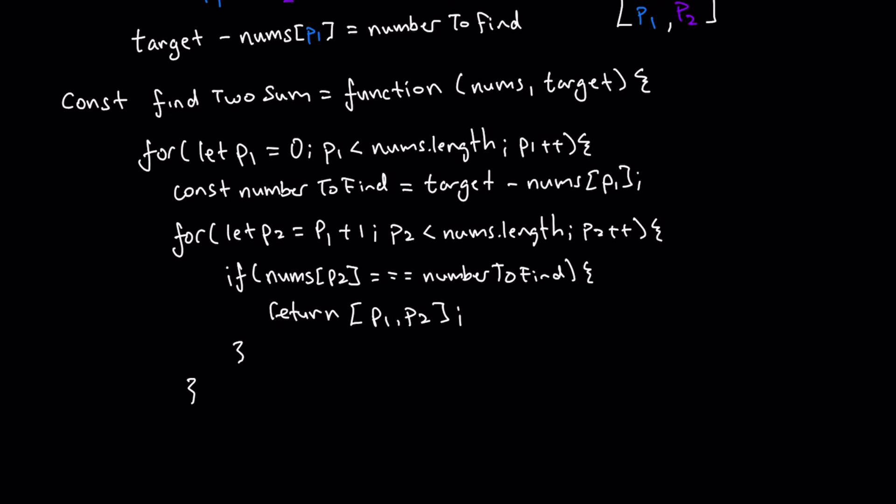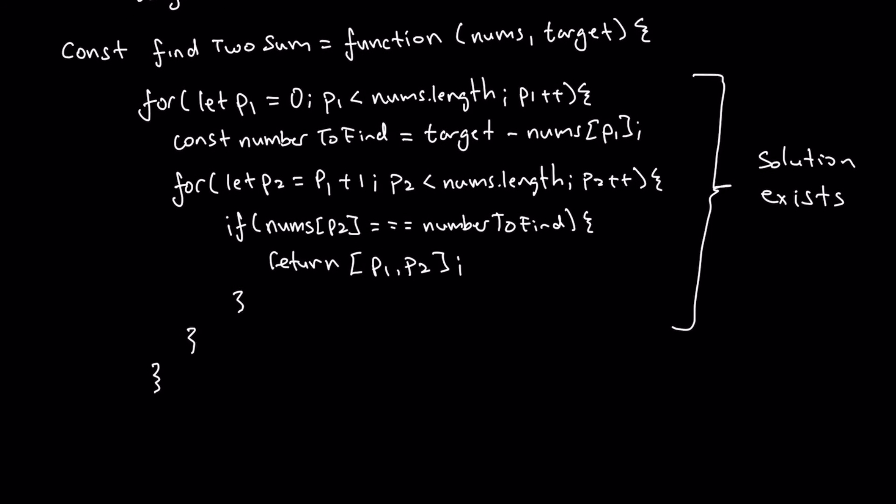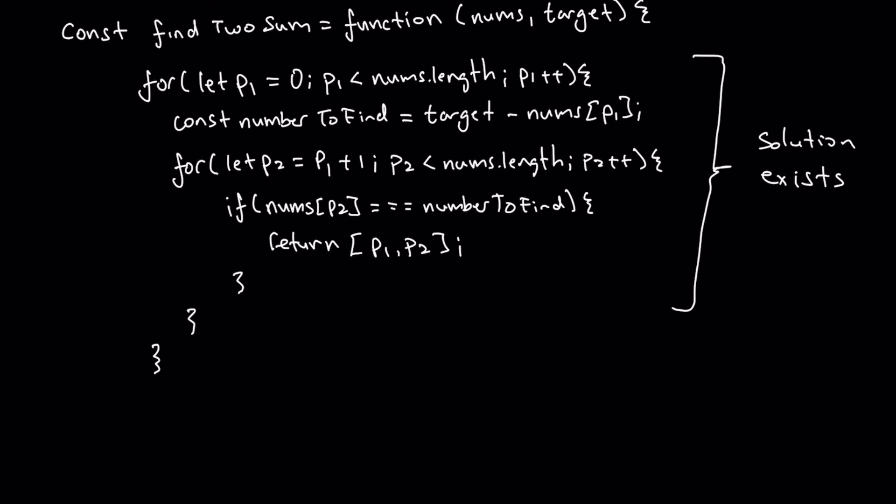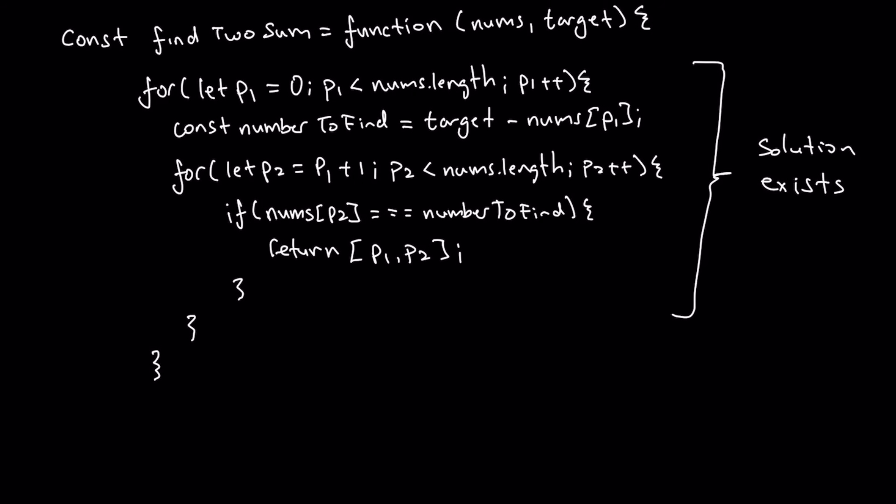And if no number here matches, p1 is going to naturally progress and run the same loop of code again. So here we're going to close this brace as well. And now this block right here represents pretty much our solution exists. If there is an existing solution, this for loop block of code is going to catch everything.